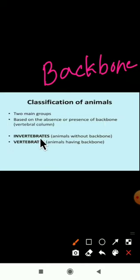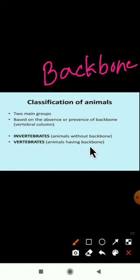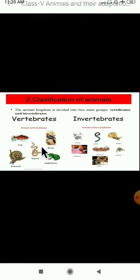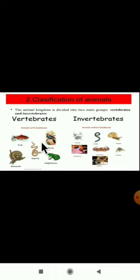Based on the presence or absence of a backbone, animals are divided into two groups: vertebrates and invertebrates. Animals which have a backbone are called vertebrates; animals which do not have a backbone are called invertebrates.